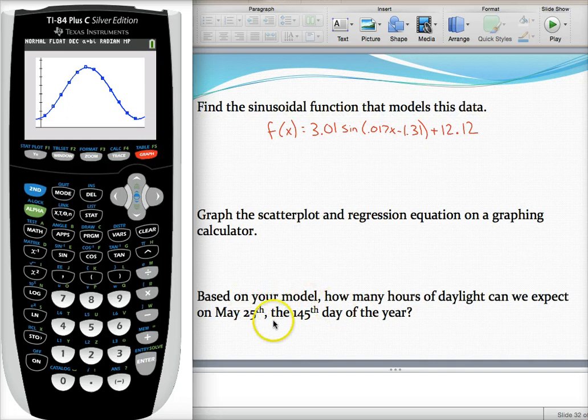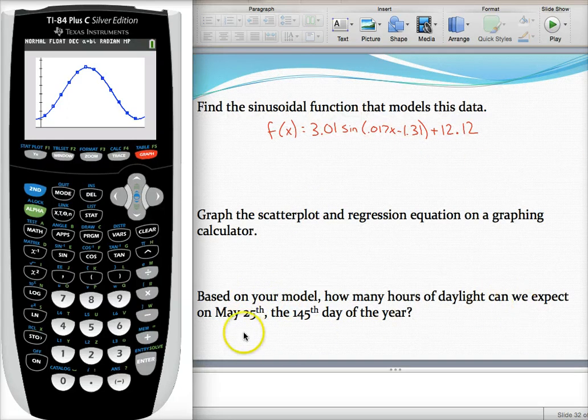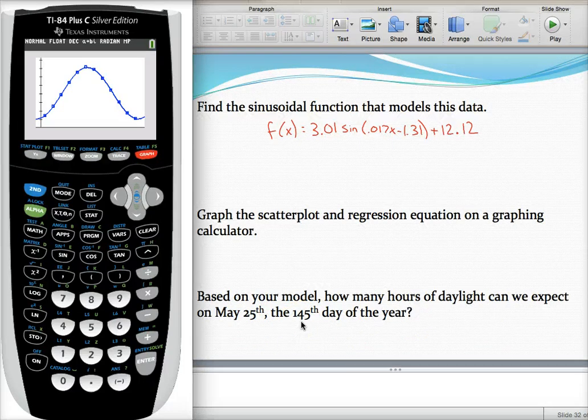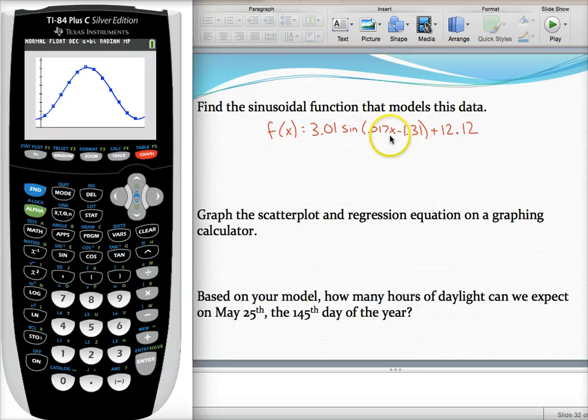And then we can make a prediction. So based on this model we found, let's predict how many hours of daylight we can expect on May 25th, the 145th day of the year. Well, one way to do this, just algebraically, would be to take 145 as your x value and just plug it in your equation, and that would get your answer just fine.